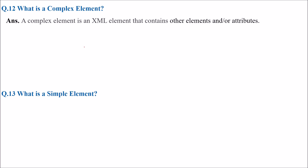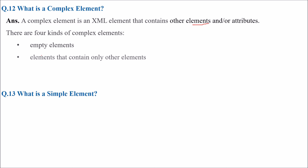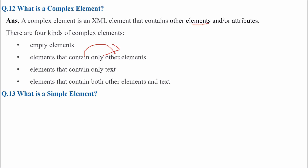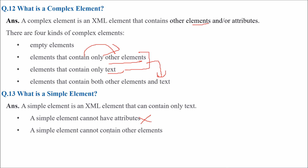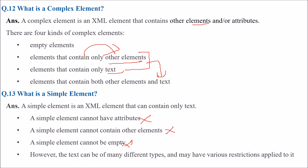What is a complex element and what is a simple element? A complex element is an XML element that contains other elements or an attribute. There are four kinds of complex elements: empty elements, an element that contains only other elements, an element that contains only text, and an element that contains both other elements and text. A simple element is an XML element that can contain only text. A simple element cannot have attributes, cannot contain other elements, and cannot be empty. The text can be of many different types, and various restrictions can be applied.